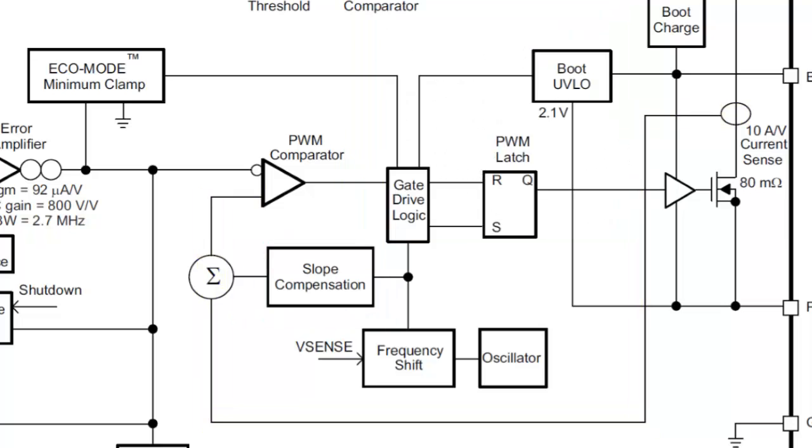A short circuit on the output voltage can potentially cause excessive inductor current. The TPS54232 avoids this by monitoring the VSENSE input and proportionally lowering the switching frequency when the output voltage droops.